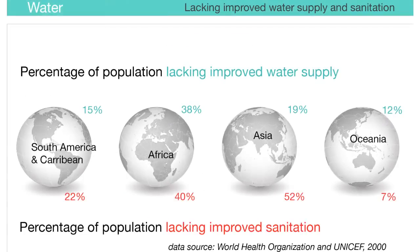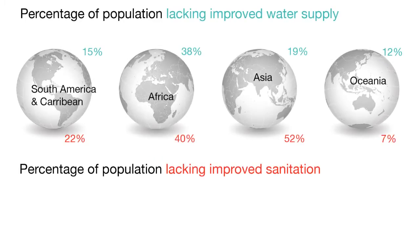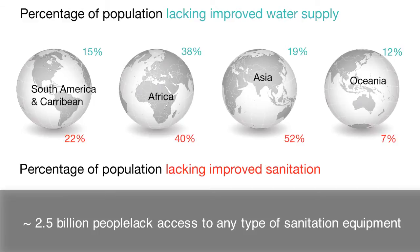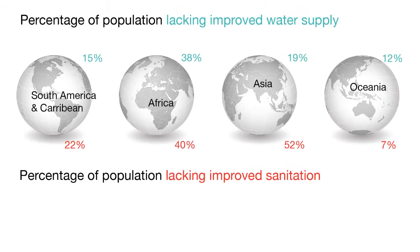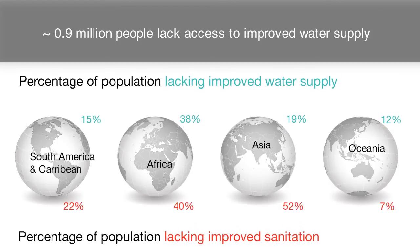This figure shows the populations by region that are lacking improved water supply and sanitation. There is a greater percentage of the population that still lacks access to improved sanitation — 2.5 billion people lack access to any type of sanitation equipment — compared to the global population that lacks access to improved water supply.